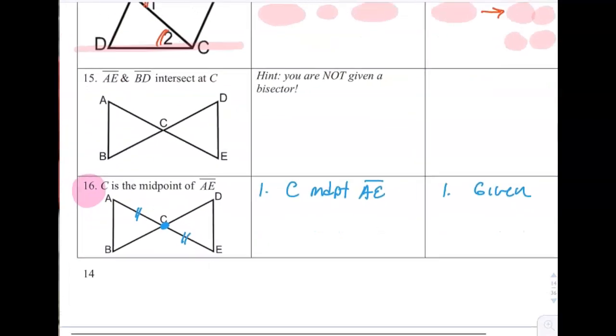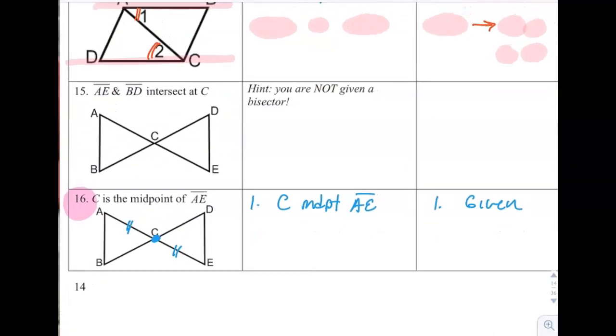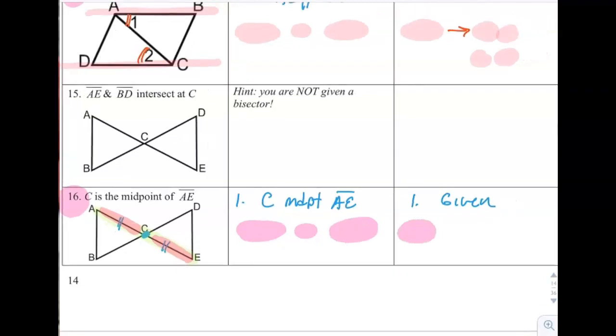Number 16. It says C is the midpoint of AE. So it's only the midpoint of this as far as we know. So if that's true, then that's the same as that. So AC, we can conclude, is congruent to EC because a midpoint implies two congruent segments.